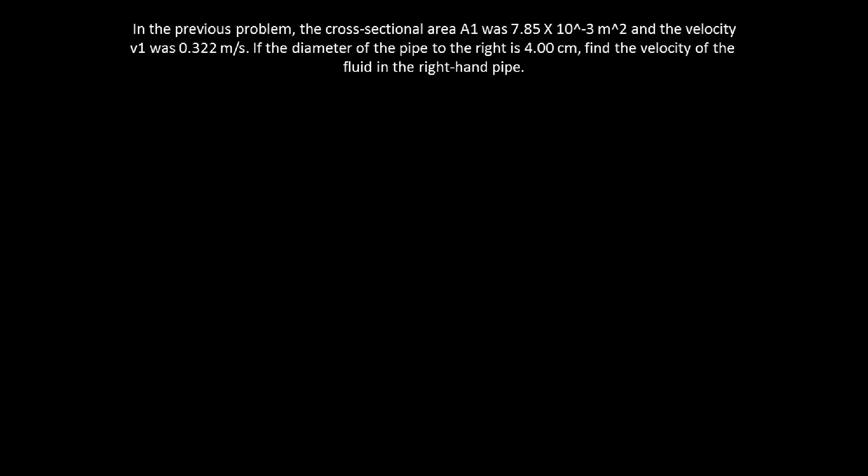The cross-sectional area of the right-hand side of the pipe can be solved using the following equation. A₂ = πd₂²/4 = π × 0.04 meters squared over 4. And this is now equal to 1.26 × 10⁻³ meters squared.